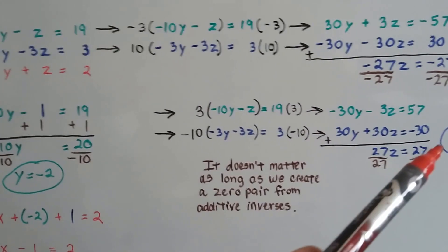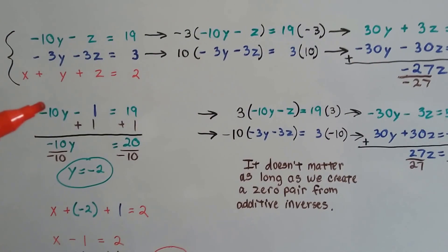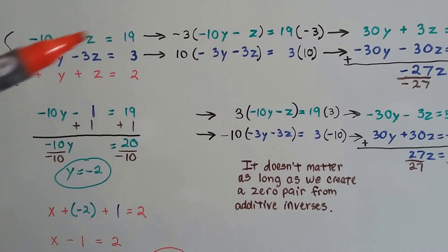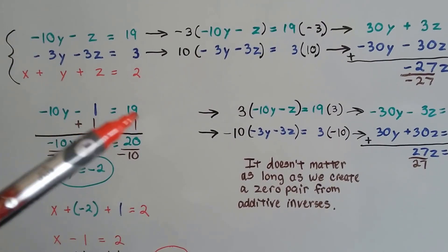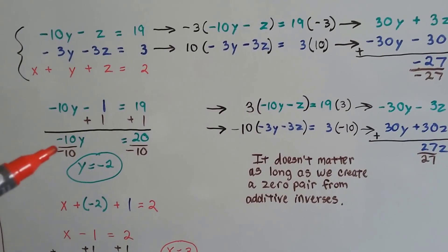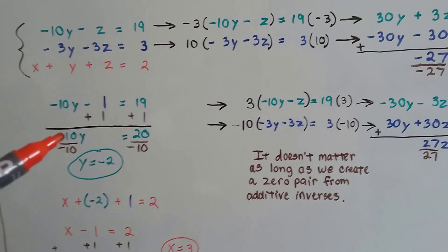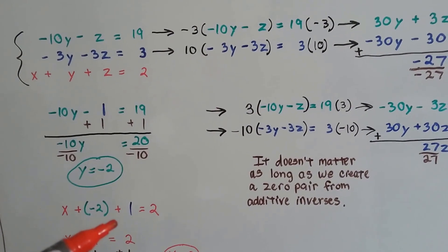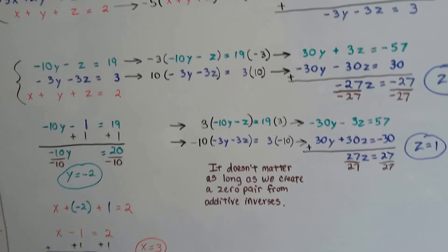Now that I know z equals 1, I plugged it into the first equation. Instead of negative 10y minus z equals 19, I got negative 10y minus 1 equals 19. I added 1 to each side, getting negative 10y equals 20, then divided each side by the coefficient negative 10, and we find that y equals negative 2.